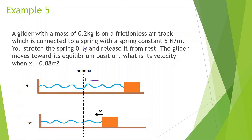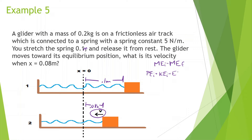We're stretching the spring 0.1 meters and releasing from rest; later it's 0.08 meters away and we want to know how fast it's going. We use mechanical energy initial equals mechanical energy final. I like to write everything out: potential energy initial plus kinetic energy initial plus elastic potential energy initial equals potential energy final plus kinetic energy final plus elastic potential energy final. At the beginning: no gravitational PE (on the ground), no KE (released from rest), but yes — elastic PE because it's stretched.